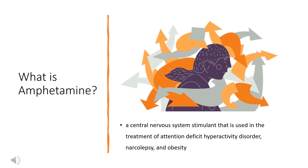Amphetamine was discovered as a chemical in 1887 by Lazar Adelianu, and then as a drug in the late 1920s. Amphetamine belongs to the phenethylamine class.